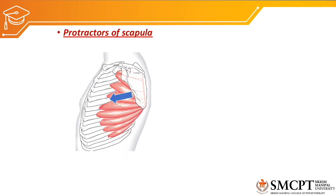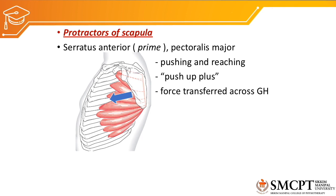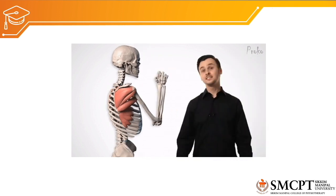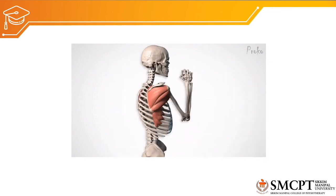Next, moving on to protractors of the scapula. Protractors of the scapula are the serratus anterior and pectoralis major. These muscles are responsible for pushing and pulling, or push-up actions. When these muscles contract there will be protraction of the scapula and the force will be transferred across the glenohumeral joint towards the upper limb. The serratus anterior is also called the boxer's muscle. You can see how the serratus anterior contracts to transfer force from scapula protraction to the upper limb.